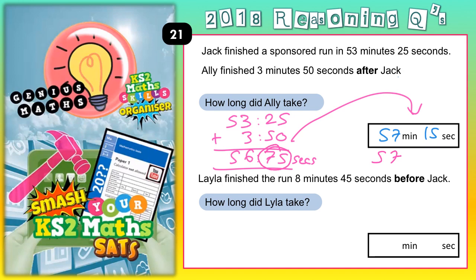Taking out 60 seconds — which is the extra minute — from 75 seconds leaves 15 seconds. So that 75 is 60 seconds (your extra minute) plus an extra 15, making 1 minute 15. And 56 minutes plus 1 minute 15 is 57 minutes 15 seconds — still the same answer. With a column method, remember there are only 60 seconds in a minute and 60 minutes in an hour.